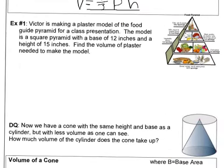Let's check out this first problem. Victor's making a plaster model of the food guide pyramid for a class presentation. The model is a square pyramid with a base of 12 inches. So that means that this is 12 inches and this side is going to be 12 inches as well. And a height of 15. Find the volume of the plaster you need to make the model.